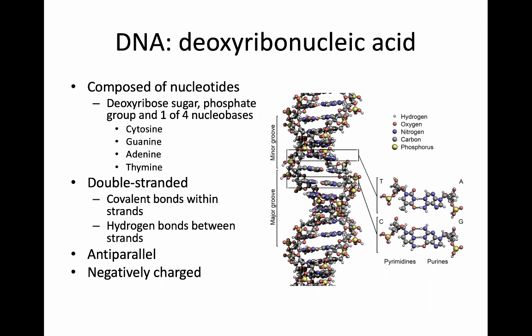This is a genomics project — we're looking at the full complement of DNA in these cells. DNA is comprised of nucleotides: deoxyribose sugars with four bases — cytosine, guanine, adenine, and thymine — our pyrimidines and purines. It is a double-stranded stable molecule with covalent bonds within the strands and hydrogen bonds between the strands. It's antiparallel, moving in a 5' to 3' direction up one end of the helix and the opposite direction coming down. Importantly, DNA has a negative charge, which means it is readily suspended and dissolved in water.